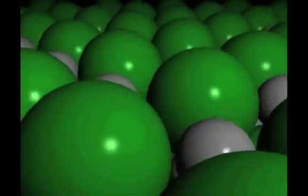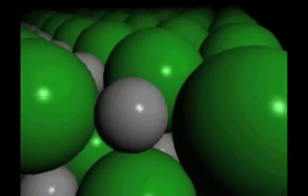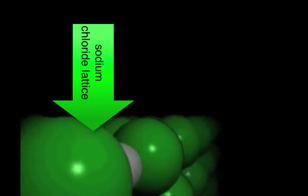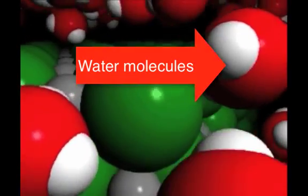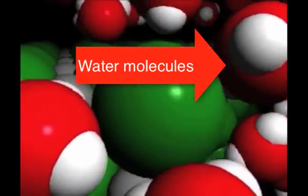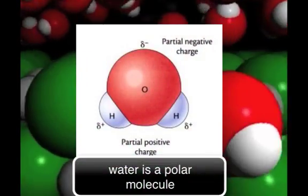We've got strong electrostatic forces that are holding these ions together. So we need to compensate for this somehow. So if we're using energy to break down the lattice, then we need to release energy when the ionic compound dissolves. And this happens, for example, when sodium chloride dissolves in water.